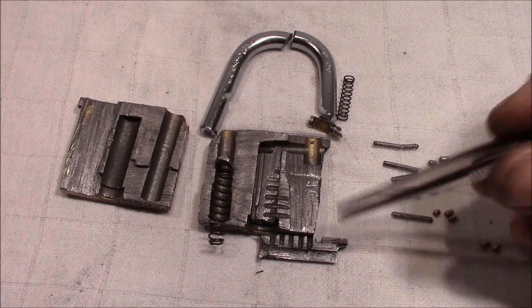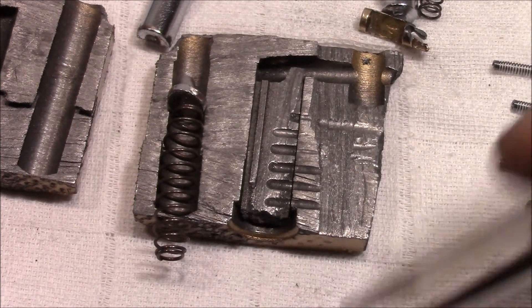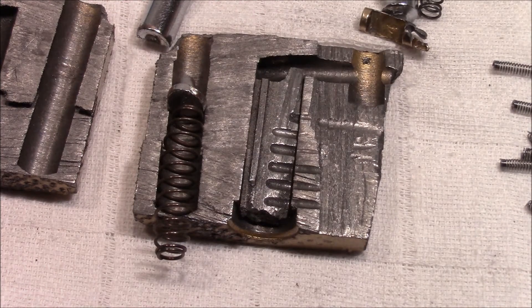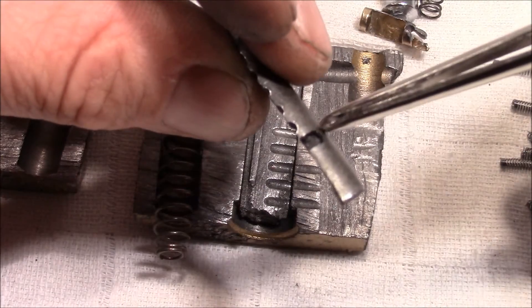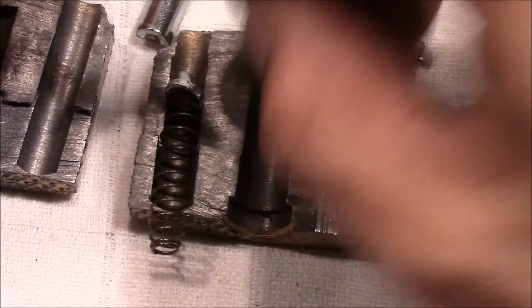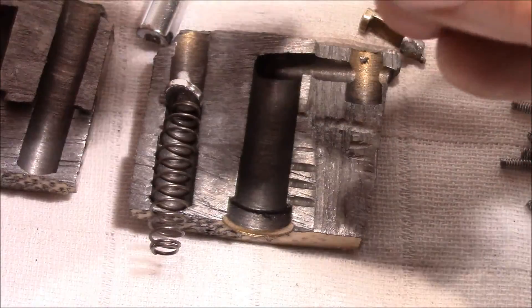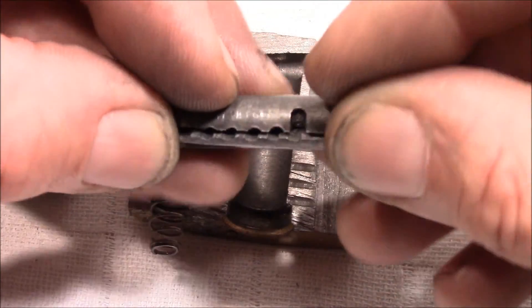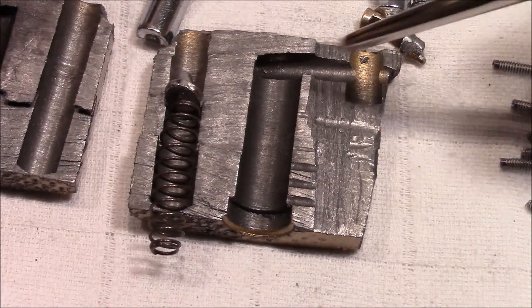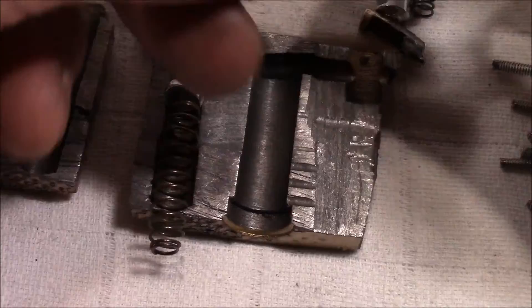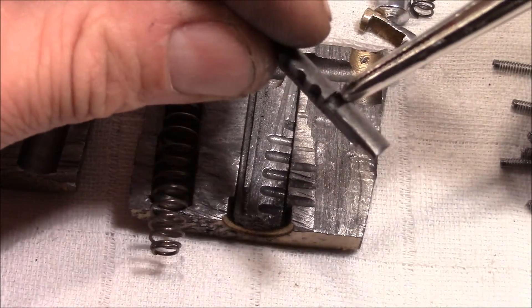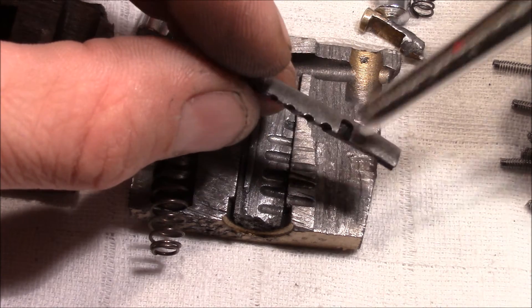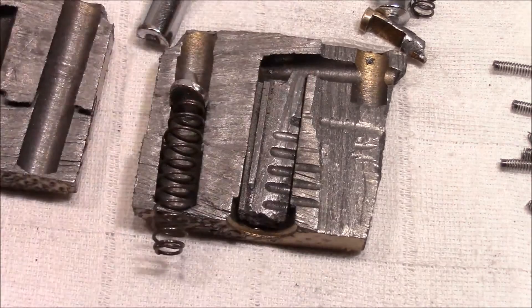When you turn the plug, it retracts the locking bolt and then it's making free this area here and the shackle pops out by the spring tension here. So it's a five pin tumbler as you can see. We have five chambers, one two three four five. And the sixth groove here is the retaining pin.